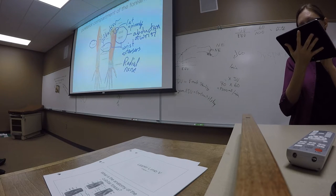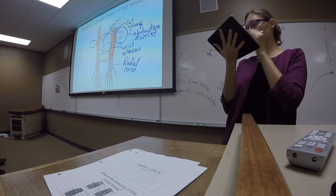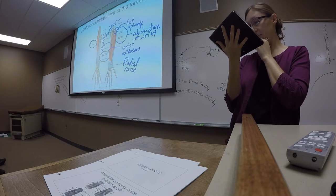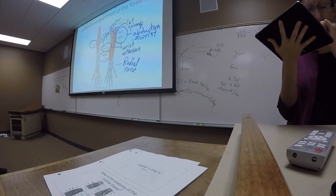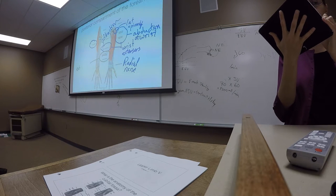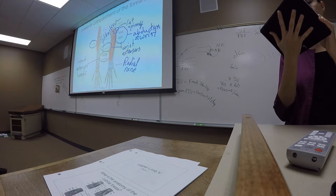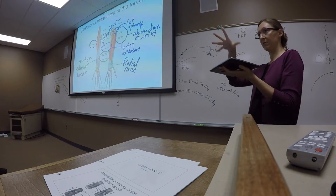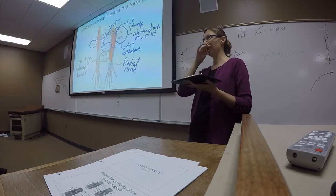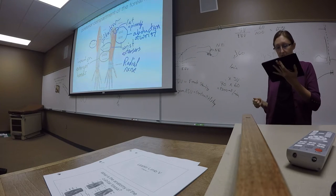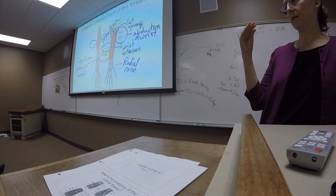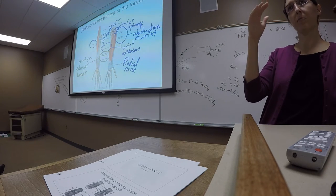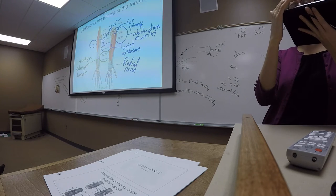Then we have our digit extensors. The main one is extensor digitorum, and then the extensor digiti minimi for the little finger. These insert onto the extensor hoods — the same broad triangular ligaments across the dorsal surface of the digit that we saw for the toes. They are most often involved in the extension of the fingers, particularly at the interphalangeal joints, pulling those joints flat.